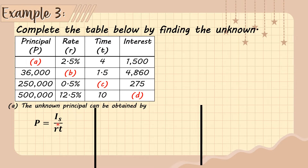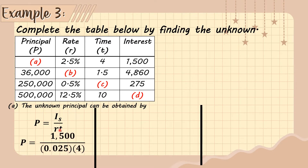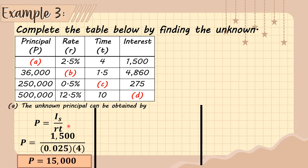Substituting the values: P = 1,500 ÷ (0.025 × 4). We multiply 0.025 × 4, then divide 1,500 by that product. The principal is 15,000. So letter A is 15,000 pesos.